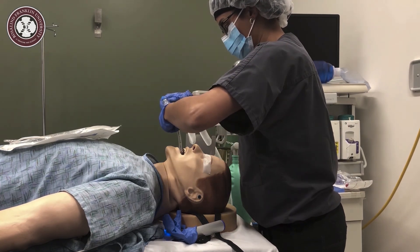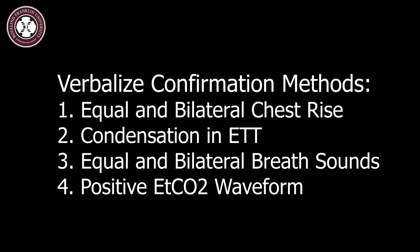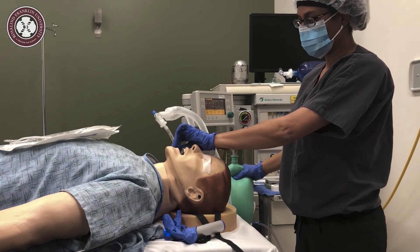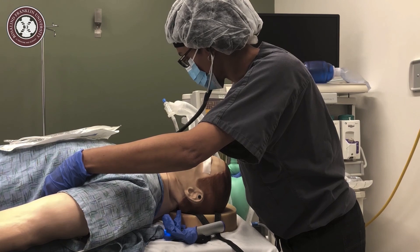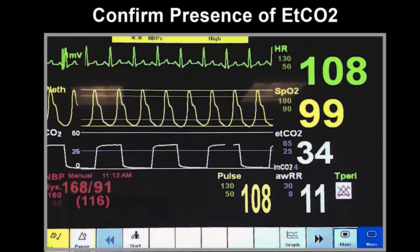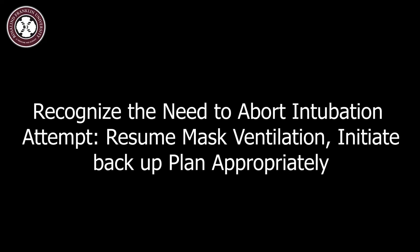Once that's completed, proceed to confirm proper placement. Confirmation methods must be verbalized. They include equal and bilateral chest movement, condensation inside the ETT, equal and bilateral breath sounds, and adequate and consistent end-tidal CO2 tracing present for greater than 3 to 5 breaths. If the intubation was not successful, recognizing the need to forego the attempt and resume mask ventilation is also a crucial step.